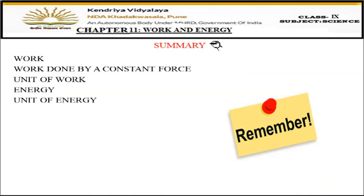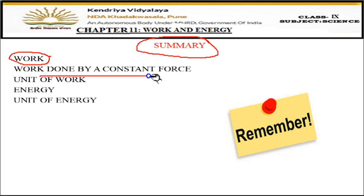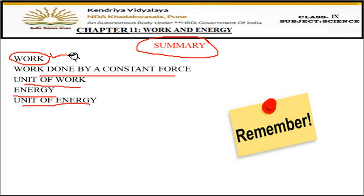We have come to the end of this video session. We learned about work, work done by a constant force, units of work, energy, and units of energy. Work done = F × S; displacement must be in the direction of force for positive work; opposite direction gives negative work; perpendicular or no displacement gives zero work. Unit is Joule. Energy is the capacity to do work, and its unit is also Joule. Next topics will continue in the next session. Read from your textbook, stay home, stay safe, and keep learning.